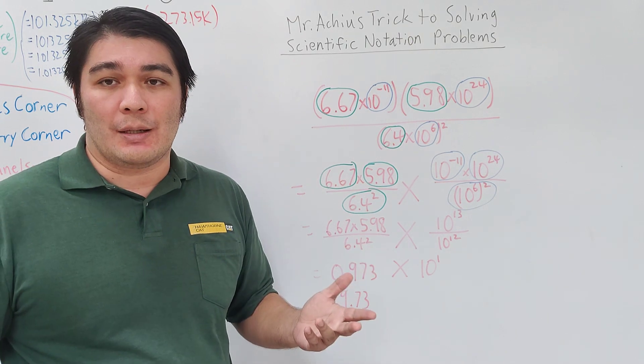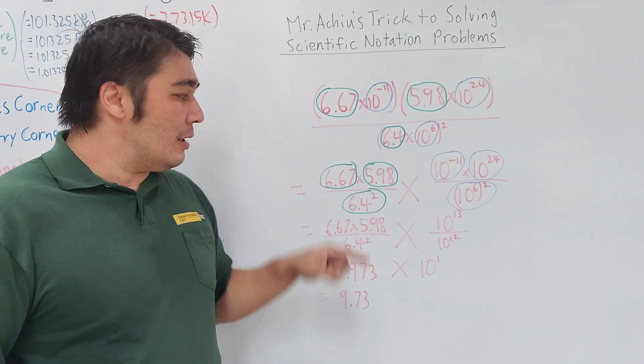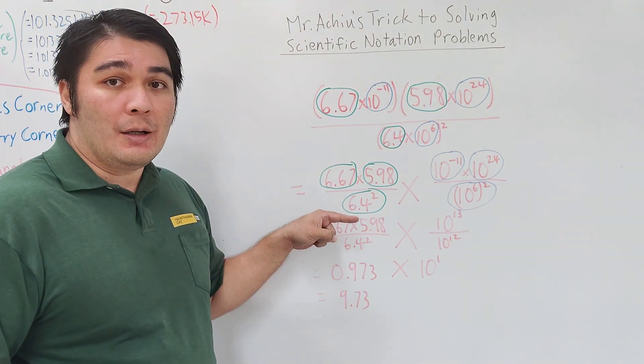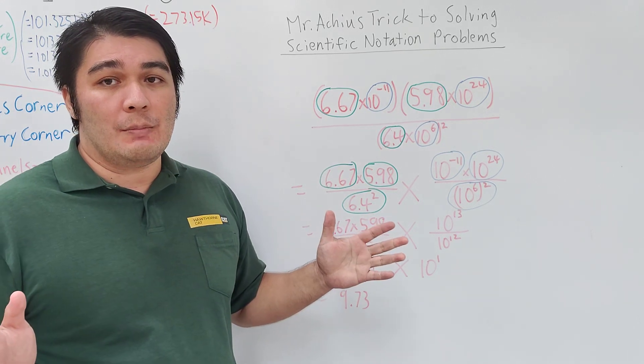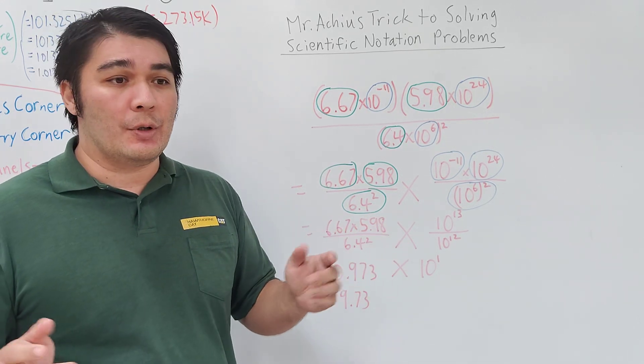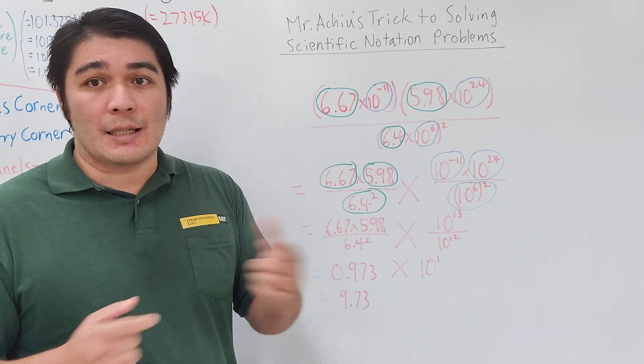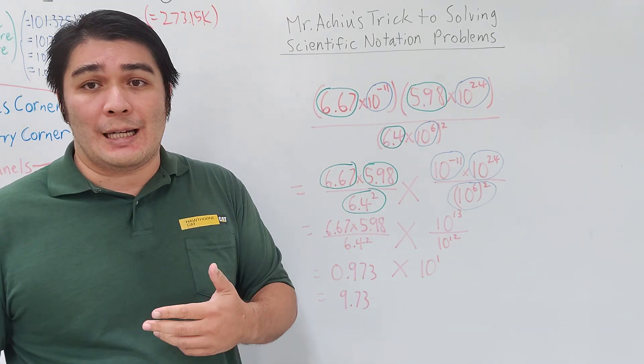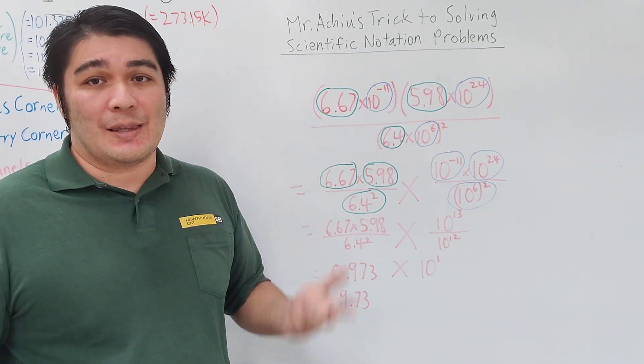an organizational trick. The reason is because as long as you don't cross the fraction bar, multiplication means order doesn't matter. I can put 5.98 times 6.67 or 6.67 times 5.98 - they're the exact same thing.